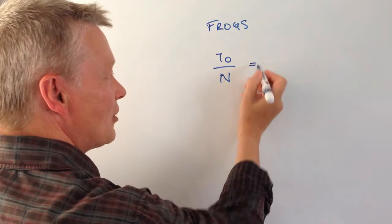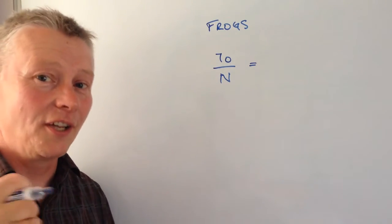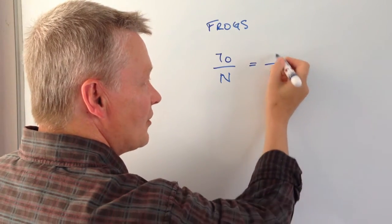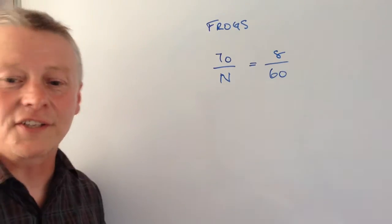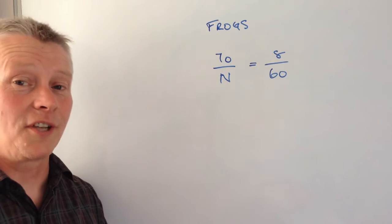She then goes back, she marks the 70, she goes back the next day and she captures another 60 of them and she finds that eight out of the sixty are actually marked. And the question is what's the total population?